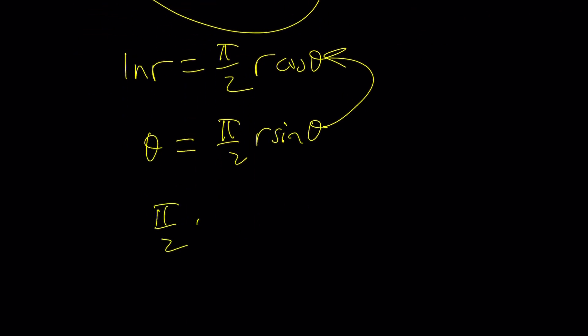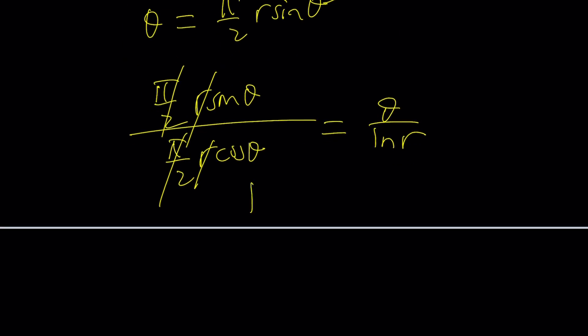So when we divide, it's going to look like this. π over 2R sine θ divided by π over 2R cosine θ, which is going to simplify a great deal, right? θ over ln R. π over 2 is going to cancel out, R is going to cancel out. I'm going to end up tangent θ equals θ over ln R.